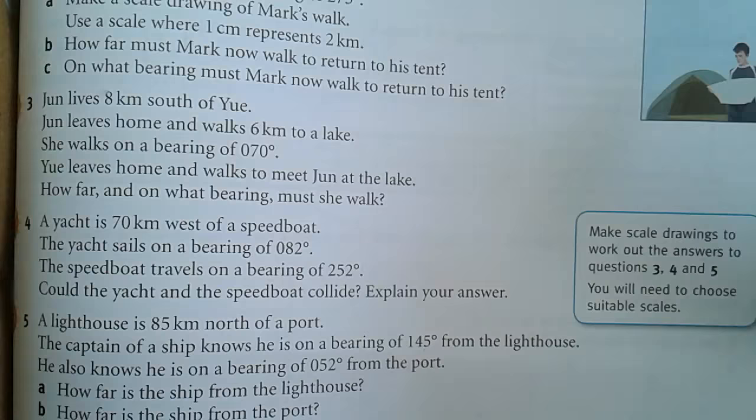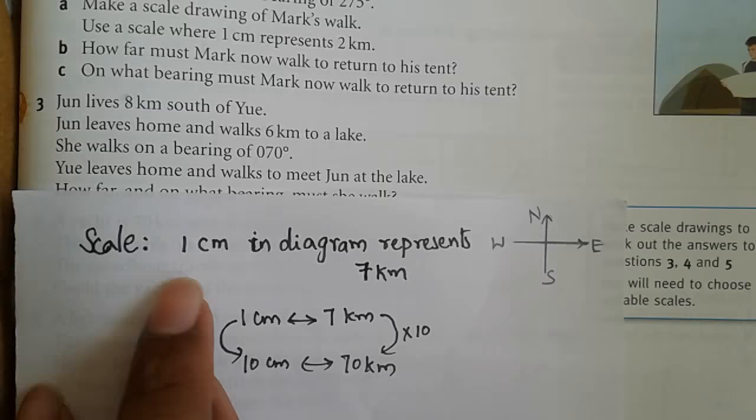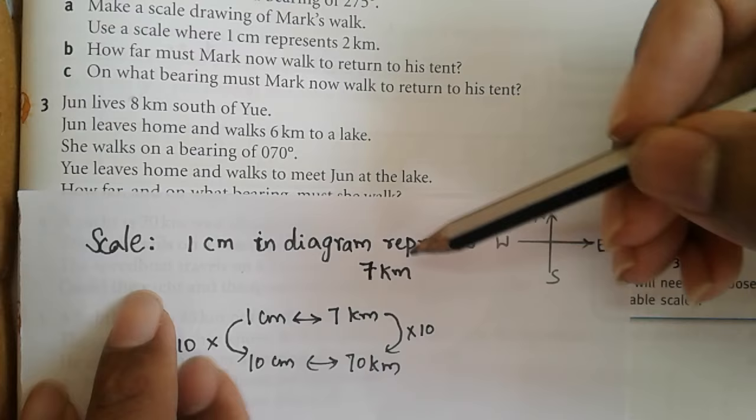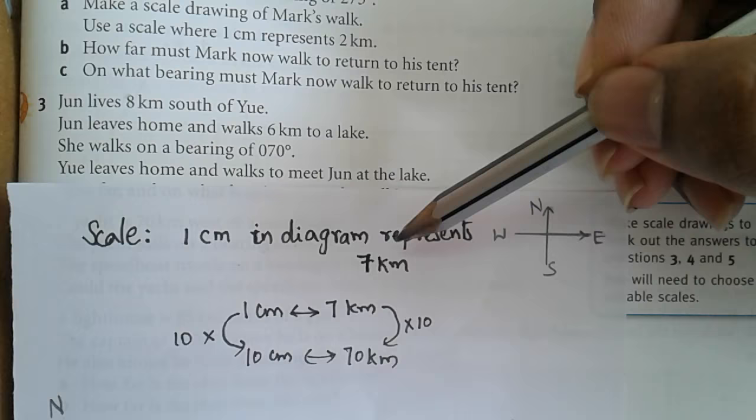Now scales help us to draw or show actual distances in a simple diagram. Here I have chosen 1 centimeter represents 7 kilometers, which means in the diagram if you see 1 centimeter it is equivalent to 7 kilometers in actual.